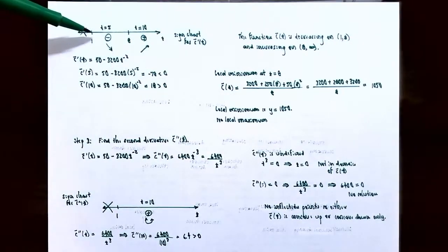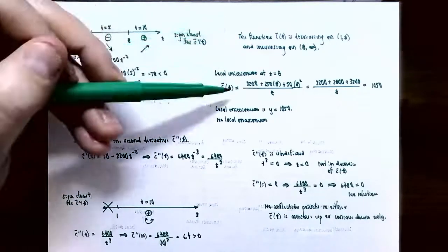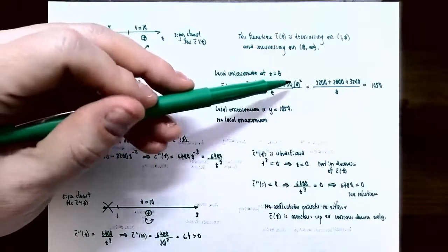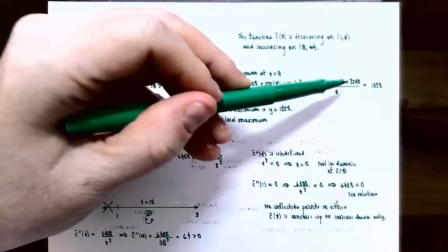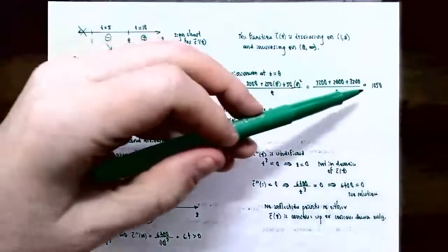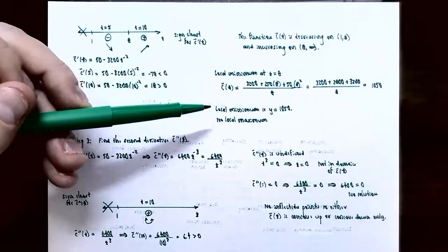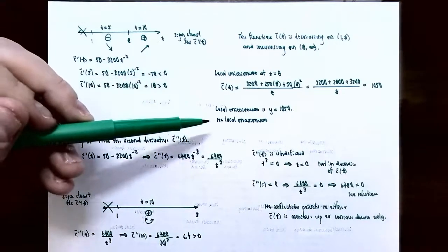Since the function is decreasing to the left of t = 8 and increasing to the right, t = 8 is a local minimum. Let's find the output value: C̄(8) = (3200 + 250·8 + 50·8²) / 8 = (3200 + 2000 + 3200) / 8 = 8400 / 8 = 1050. So the local minimum is y = 1050 at t = 8, and the graph never changed from increasing to decreasing at a critical number, so there are no local maxima.